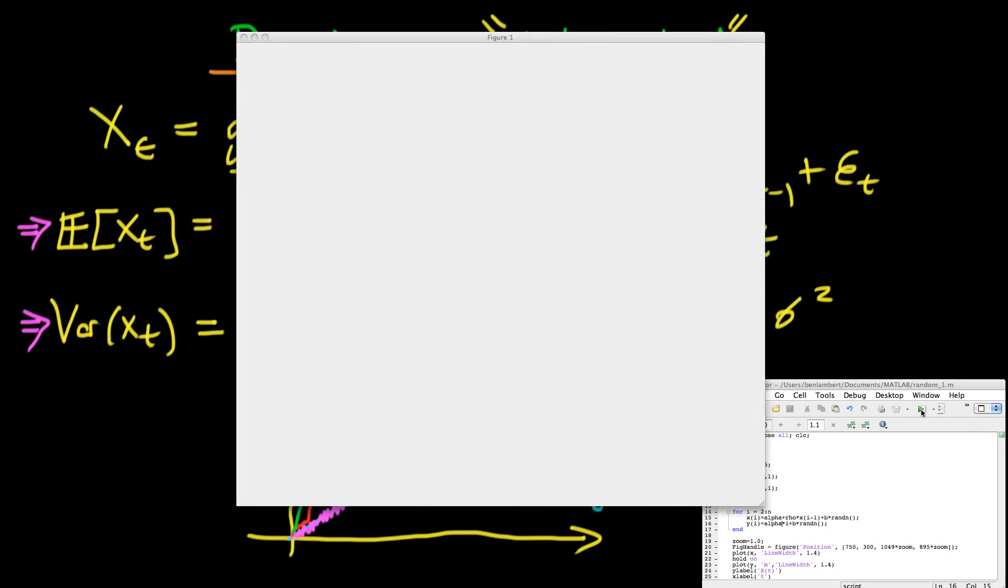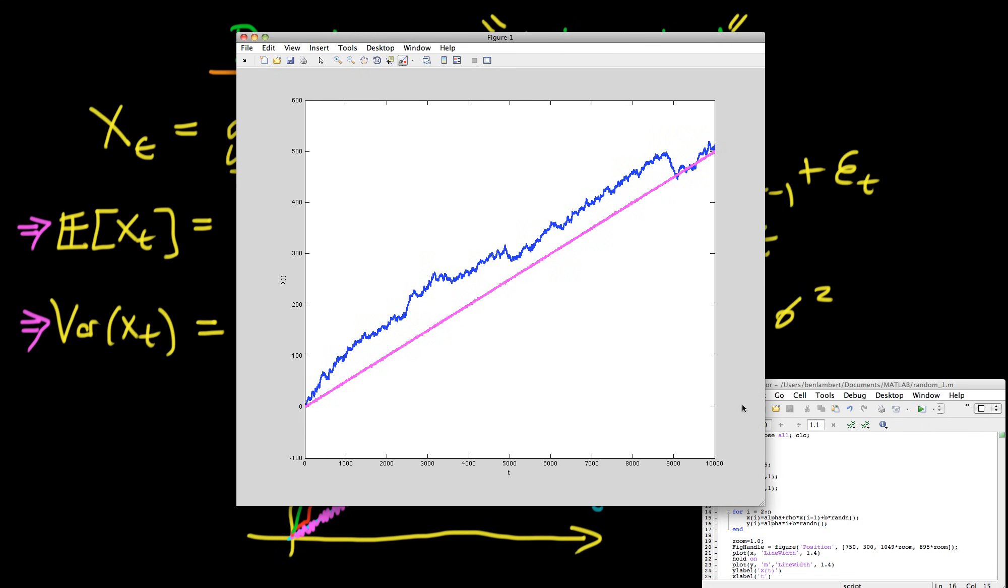And if I run it again, you can see that it wasn't just a fluke. The magenta line is still very very close to its deterministic trend, whereas the blue line here represents our random walk with drift. It's only come back to its mean way up at the sort of very end of our time series. So you can see that they're very very different with the blue line tending to get further away from the trend line as time goes on, whereas the pink line shows no such increases in variance.